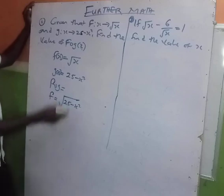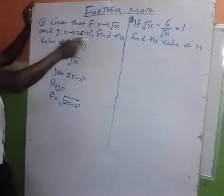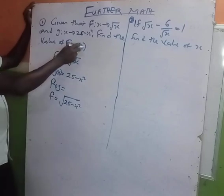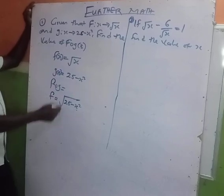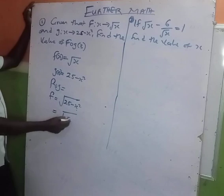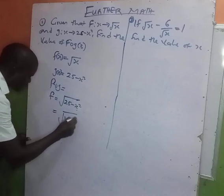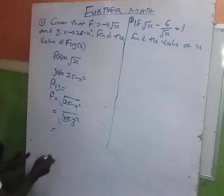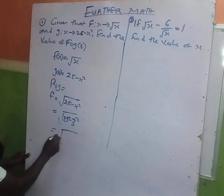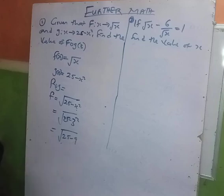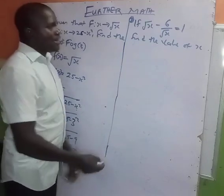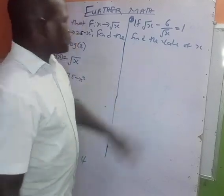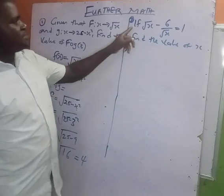Now you have to find the value of x. The g here gives you x = 3, so you have 25 - 3² = 25 - 9 = 16. Therefore your answer is 4.